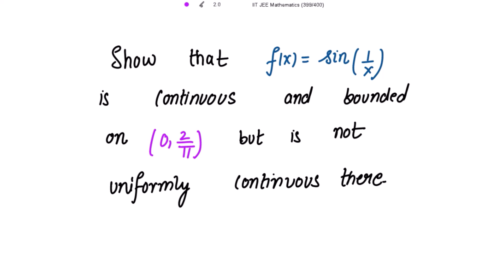We need to show that f(x) = sin(1/x) is continuous and bounded on the given open interval from 0 to 2/π, but is not uniformly continuous in this interval. When a function is continuous, it must satisfy: limit as x tends to c of f(x) equals f(c). If it satisfies this condition, then we say the function is continuous at the point c.